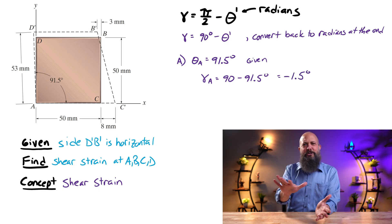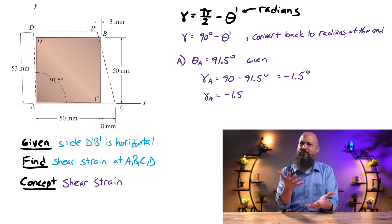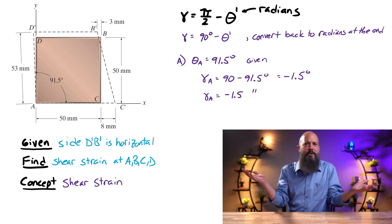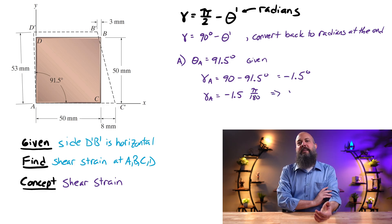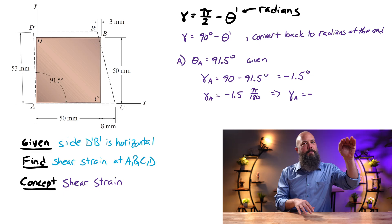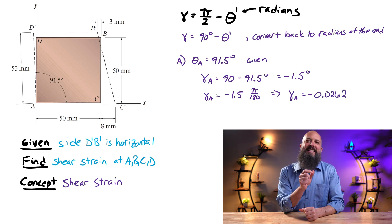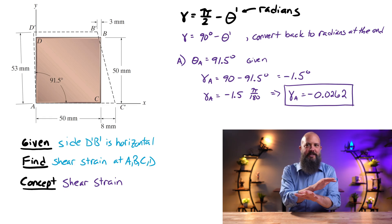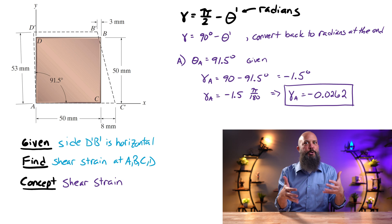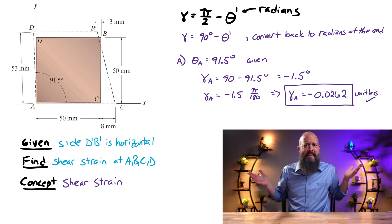So shear strain has to be in units of radians. Radian is that weird sort of unit that doesn't really exist either. It's a unitless unit also, even though it's like 60 degrees. So negative 1.5 times pi divided by 180, negative 0.0262 radians, or just the number itself, which is unitless. Again, radians are unitless, even though they're clearly a unit.